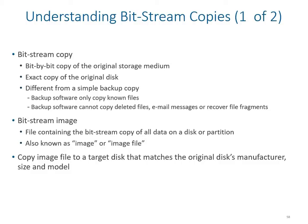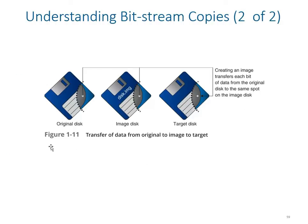A bitstream image copy file contains a bitstream copy of all the data on the disk as well as partitions which currently exist and those which existed earlier. So once we are recovering the disk, it even shows us the previous partitions and the data stored on them. The copy image file should be written to a target disk that matches the original disk's manufacturer, size, and model. For example, they show a floppy disk example — just for illustration — creating a bit-by-bit image of the original disk.